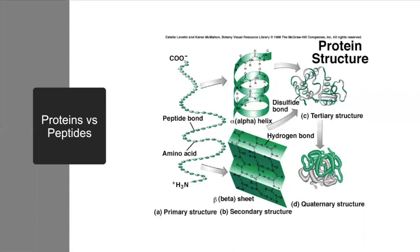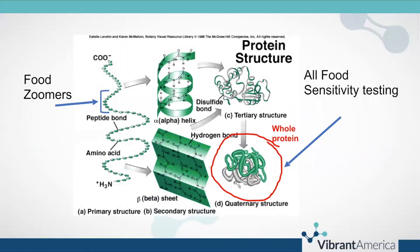Let's dive into proteins and peptides and talk about what the food zoomers are actually testing. Food sensitivity testing tests whole protein — a large, undigested protein in its whole form as present in food before digestion happens. Hydrochloric acid and proteases should be breaking this down. The food zoomers, on the other hand, test peptides within a protein — essentially the entire protein broken down so we test for all the little links in the chain.